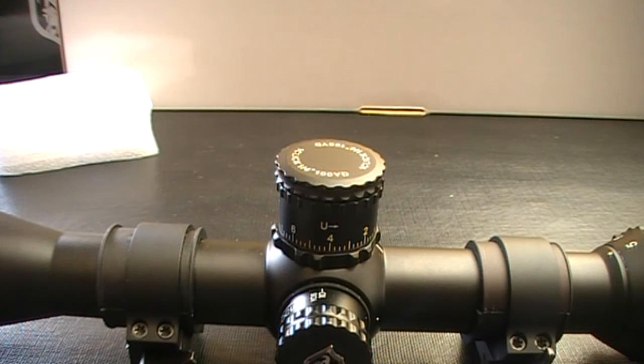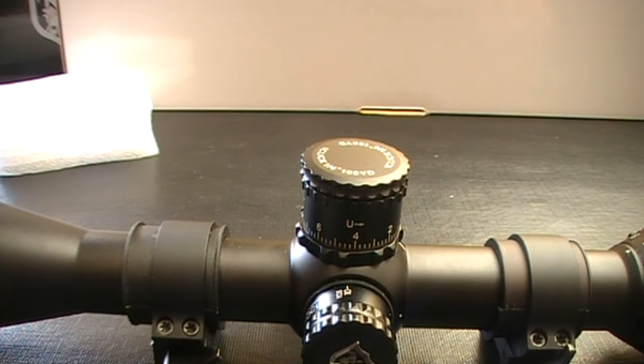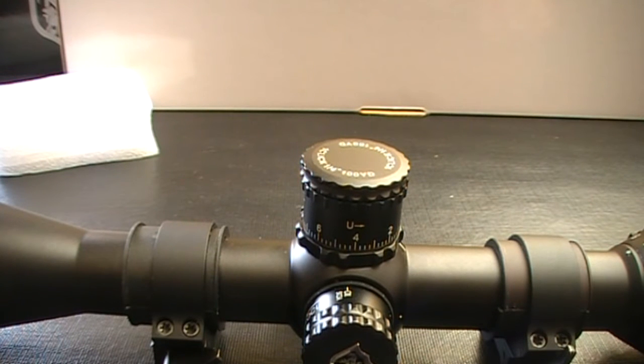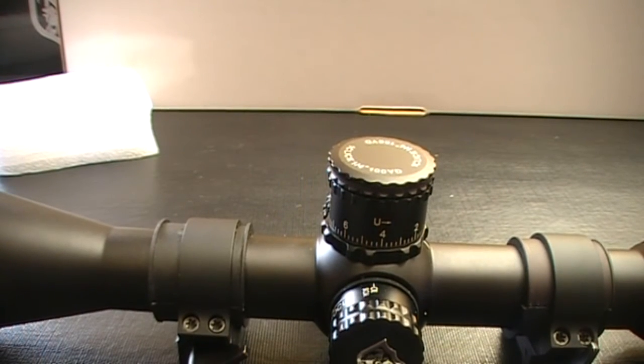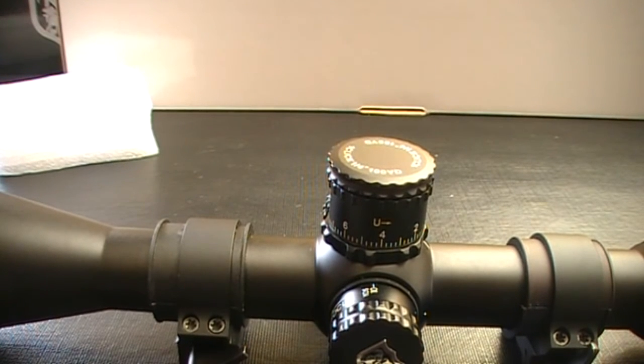Field of view is 1.7mm at high magnification, and at low power magnification is 6.7mm. Click value at 100, it says here that it's 7mm. Windage adjustment in MILs for the up and down is 30mm. Also the left and right windage adjustment is 30mm.